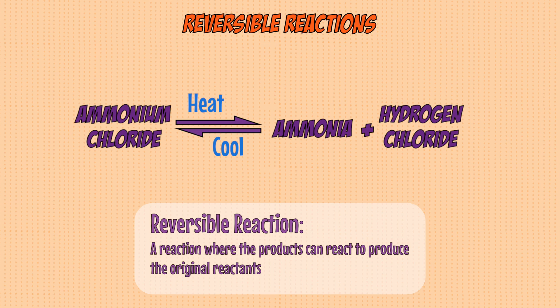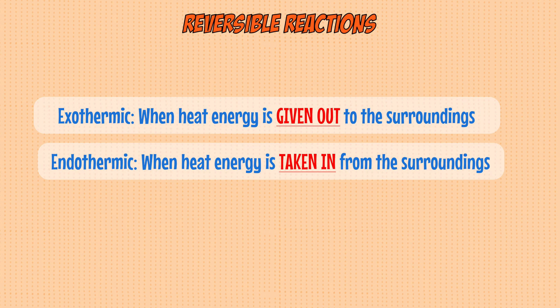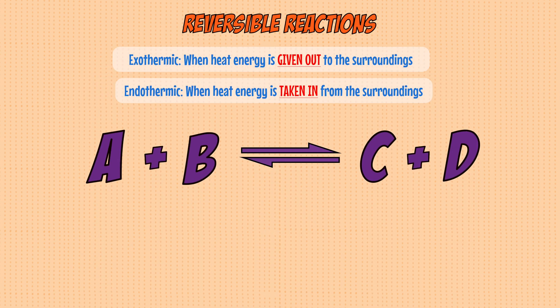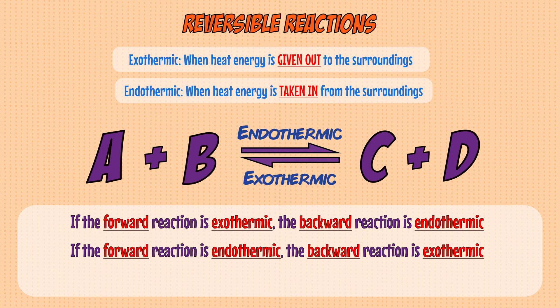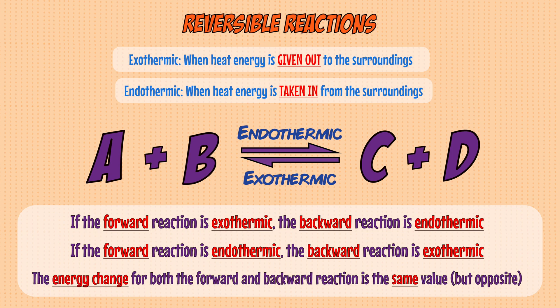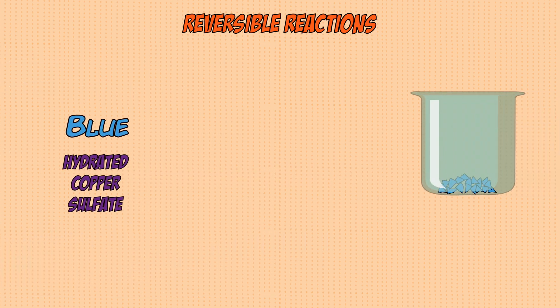When the products cool back down, the backward reaction occurs and ammonium chloride is reformed. In any reaction, heat energy is either given out or taken in — exothermic or endothermic. In a reversible reaction, if the forward reaction is exothermic, the backward reaction is endothermic, and vice versa. The amount of energy is always the same in both directions but with opposite signs.